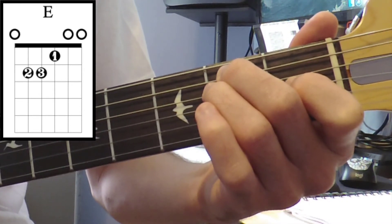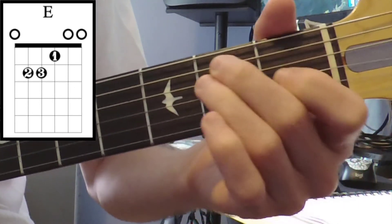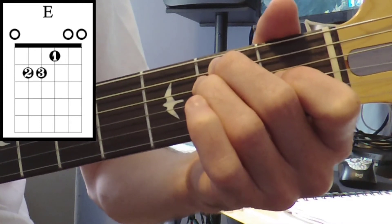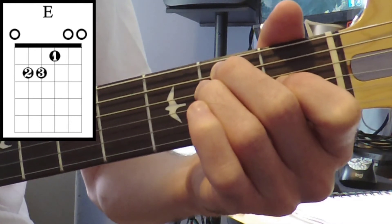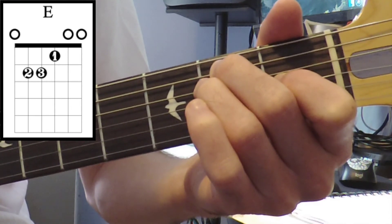open B, open E. One more time: open, second fret on the A, second fret on the D, first fret on the G, open B, open E.